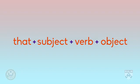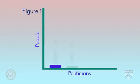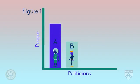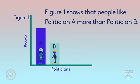Let's look at an example of these two things. Here's some data in the form of a simple figure — we'll call it figure one. Some people were asked which politician they liked best, A or B. As you can see, politician A is more popular with the people than politician B. So we begin our data commentary by telling the reader where the data is: 'Figure one shows.'